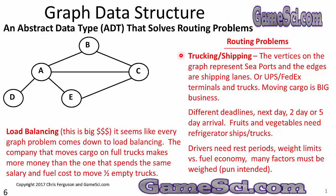For trucking and shipping, vertices represent seaports or terminals, and edges are shipping lanes or truck routes. Moving cargo involves different deadlines — next day, two-day, or five-day arrival. Fruits and vegetables need refrigerated transport. Drivers need rest periods, and there are weight limits versus fuel economy. Many factors must be weighed — pun intended. Load balancing is big, big, big money. The company that moves cargo on full trucks makes more money than one moving half-empty trucks.